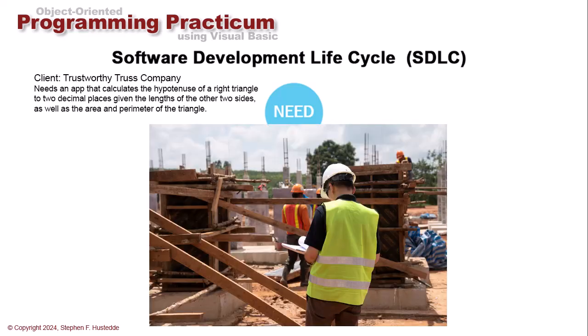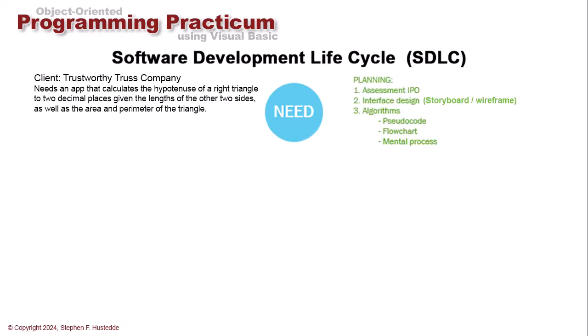For example, we have a client named Trustworthy Trust Company. They have a need for an app that will calculate, from a right triangle, the hypotenuse, the area, and the perimeter when the user provides the two right-angle sides. Now before we begin creating the software, we have identified the need, but we need to plan our project. There are several tools that we use in the industry for planning our software.